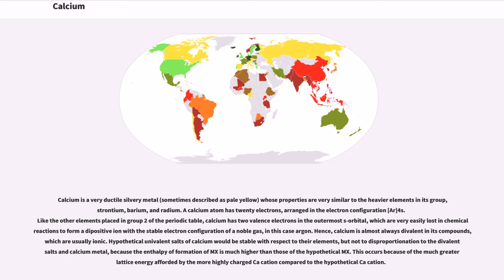Hence, calcium is almost always divalent in its compounds, which are usually ionic. Hypothetical univalent salts of calcium would be stable with respect to their elements, but not to disproportionation to the divalent salts and calcium metal, because the enthalpy of formation of MX₂ is much higher than those of the hypothetical MX. This occurs because of the much greater lattice energy afforded by the more highly charged Ca²⁺ cation compared to the hypothetical Ca⁺ cation.